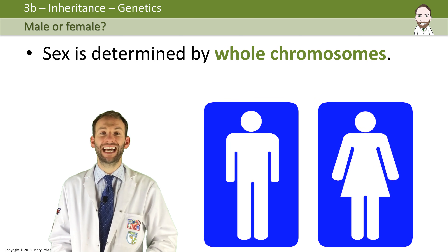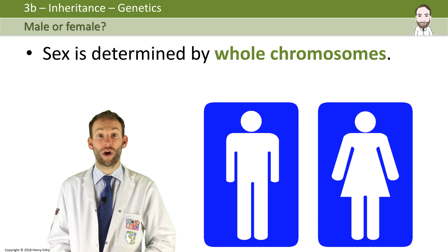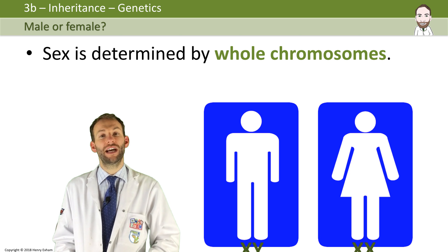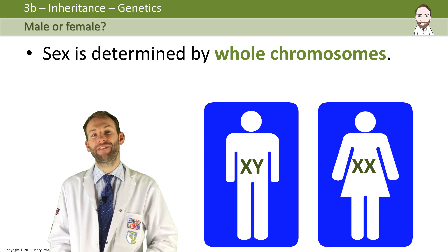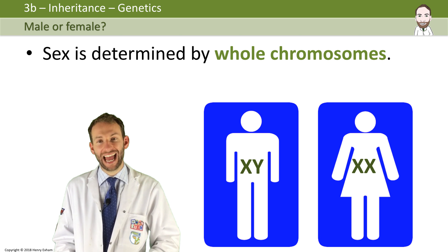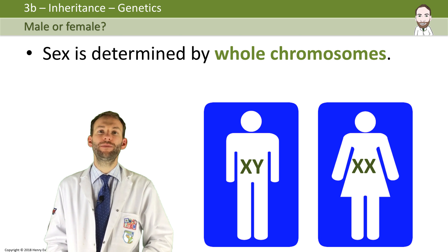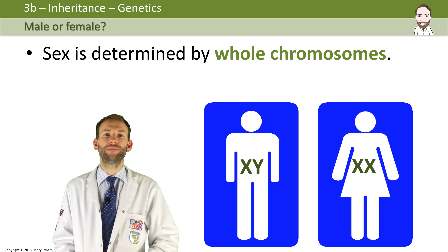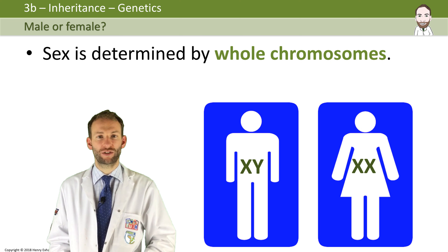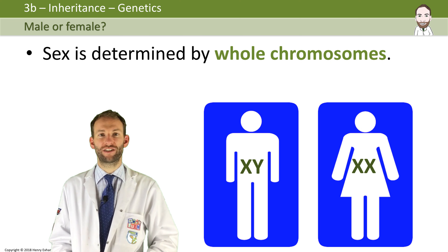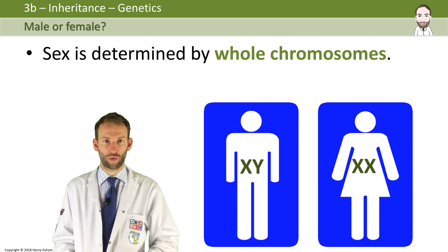Men have an X and a Y chromosome, and women have an X and an X chromosome — two X's. So you need to be able to draw a Punnett square, a genetic diagram, for this as well.